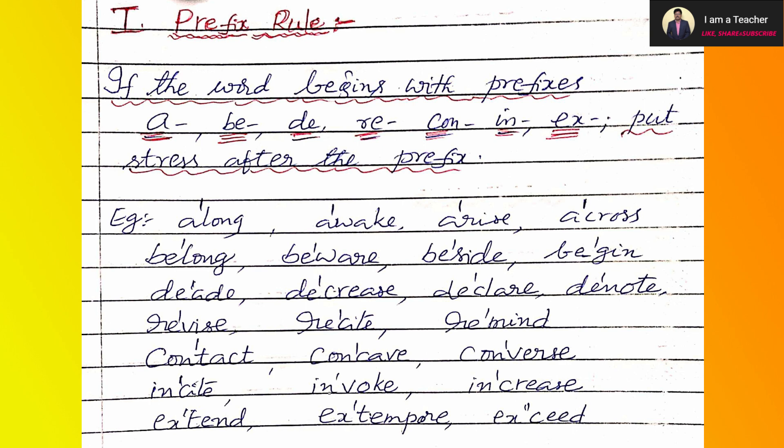For example, 'along' — after 'a', we have to draw one vertical line, so on 'l' we draw the vertical line, just before the letter. This is the way of showing the stress mark correctly. 'Awake' — stress on 'w'. 'Arise' — stress on 'r'. 'Across' — after 'a', stress on 'c'. Similarly, 'belong' — leave the prefix 'be', next letter is 'l', so on 'l' we draw the stress mark.